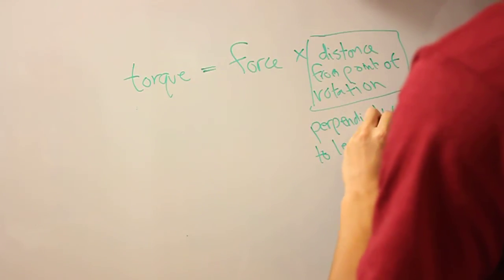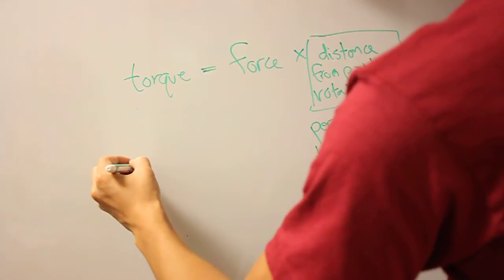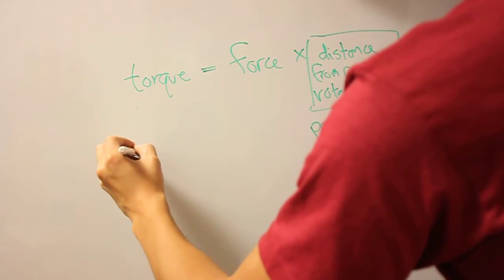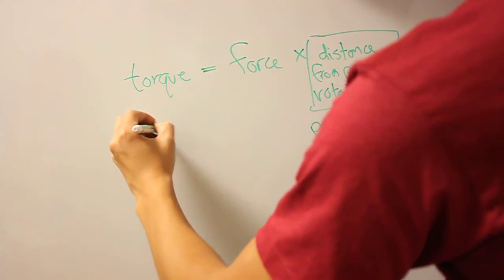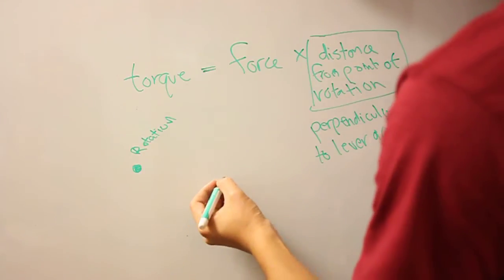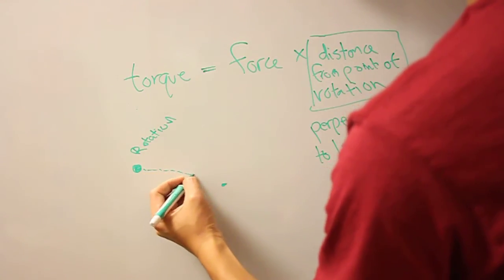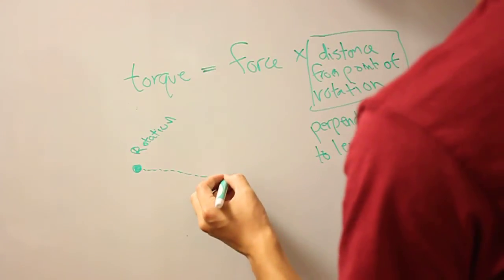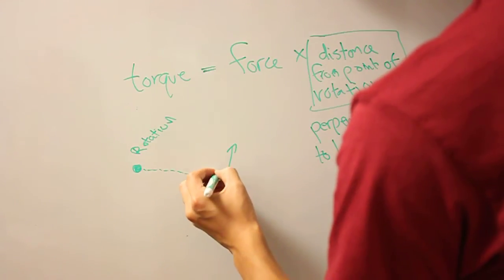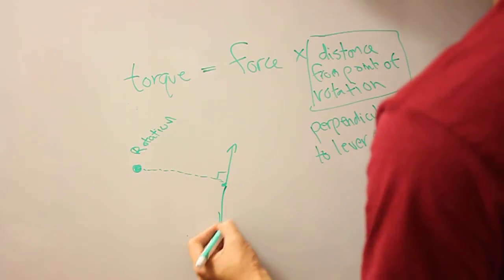And what that basically means is, if you have, here's your axis of rotation, and say you're applying a force here, well then your force to get the most torque needs to be either this way, which is perpendicular, or this way, which is perpendicular.